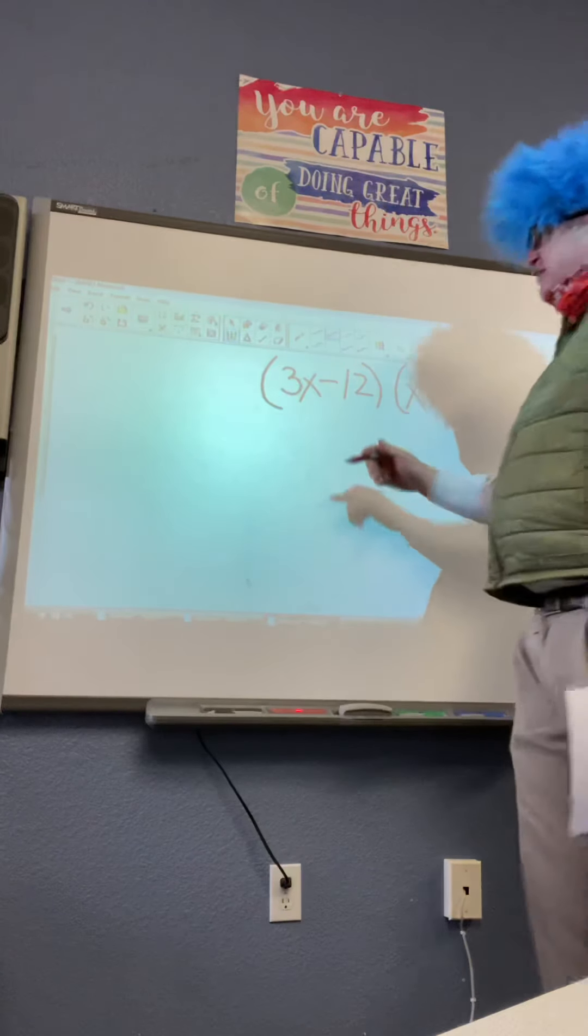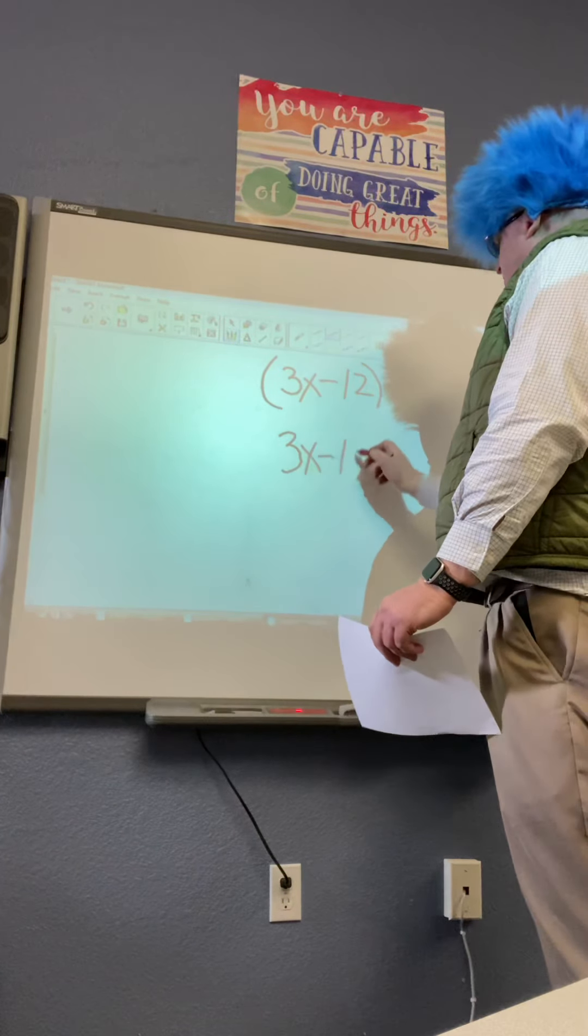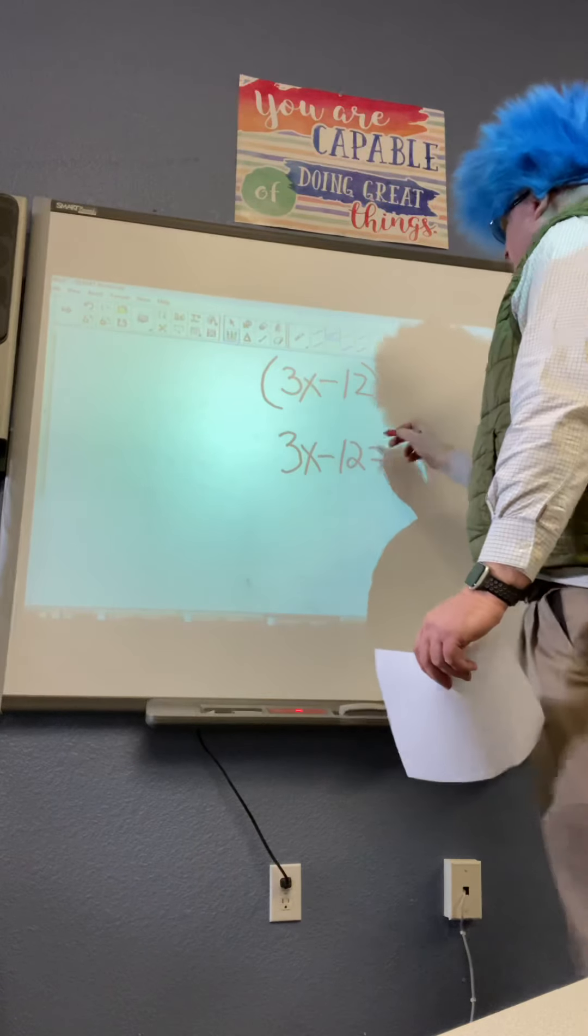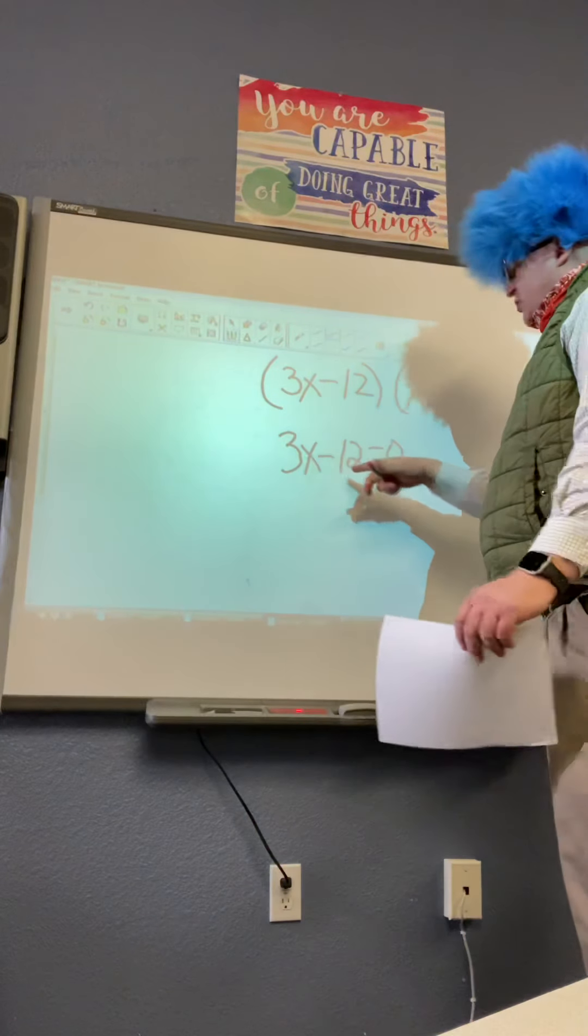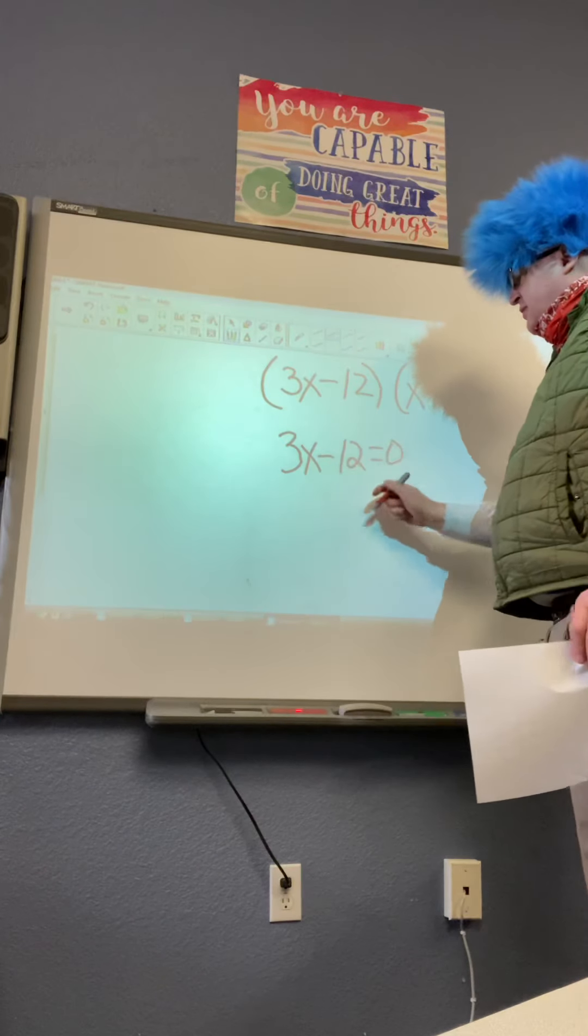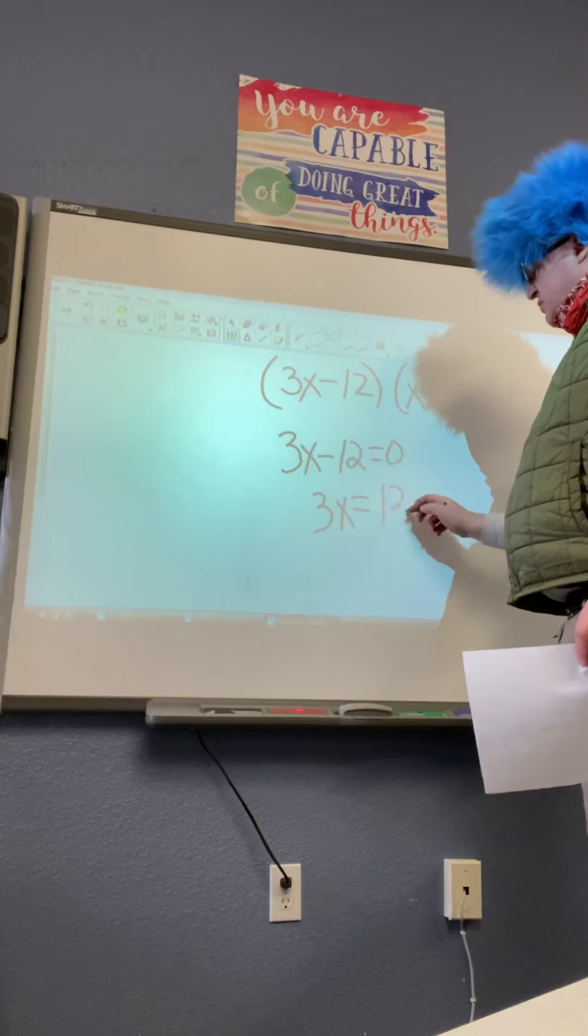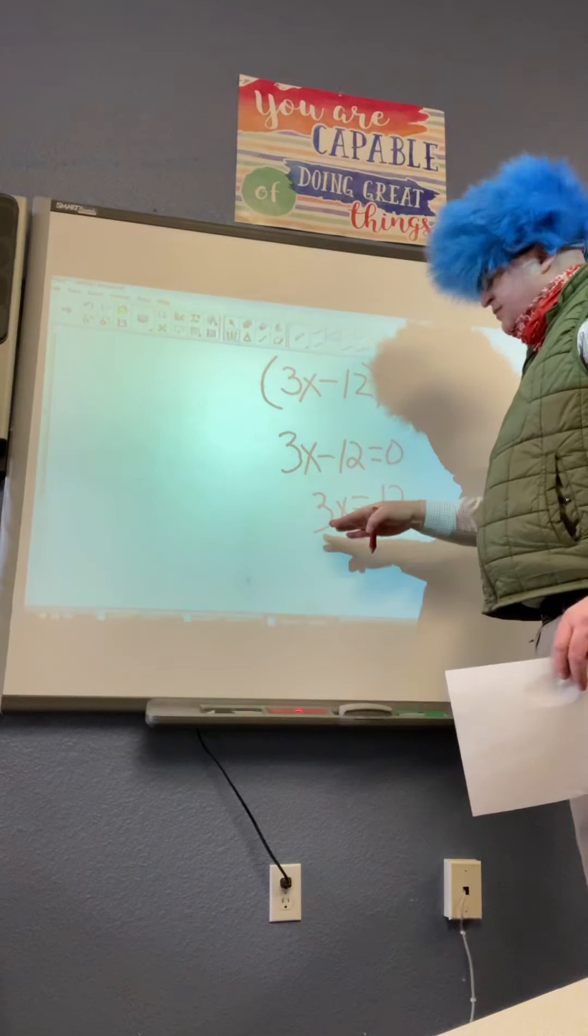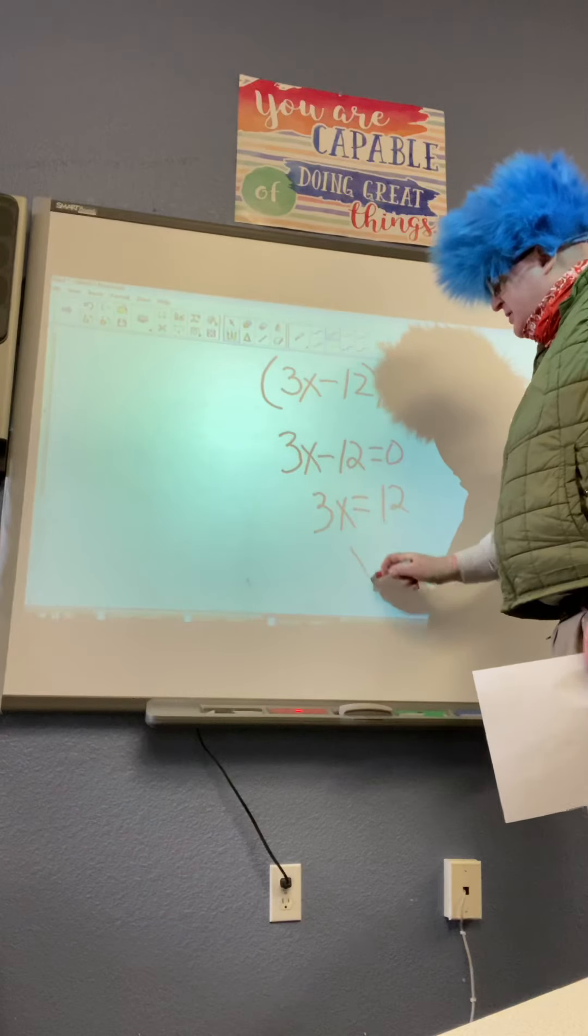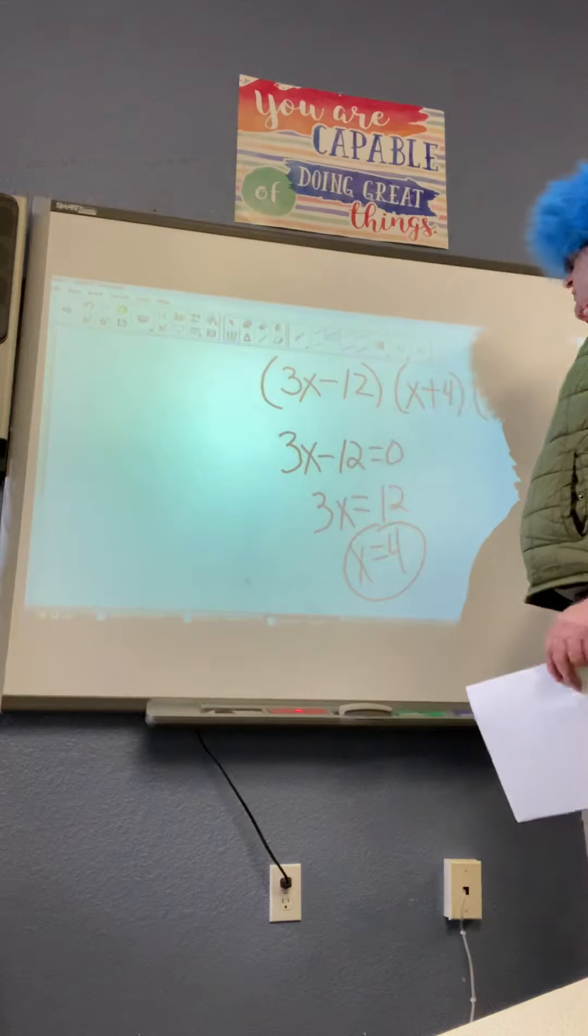All right, you solve for 0 for each one. What do we do with the 12? We add 12 to both sides, so we have 3x equals 12. We have to get rid of the 3 in front of the x. So x is 4. That's one of our answers.